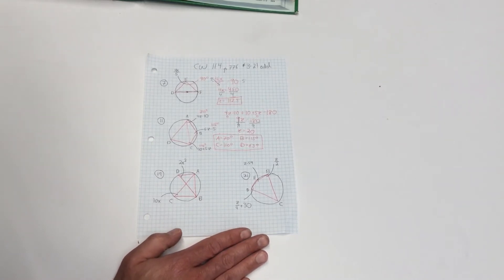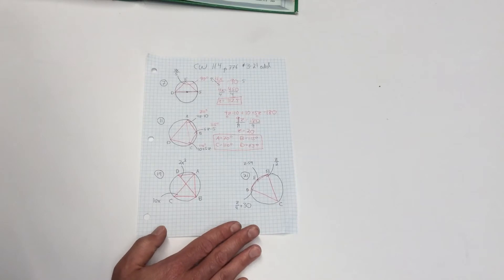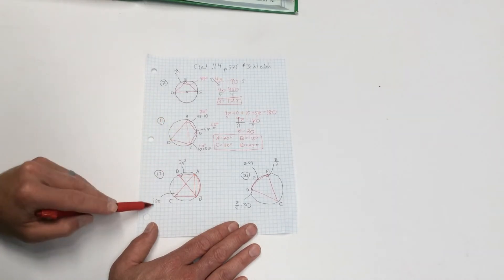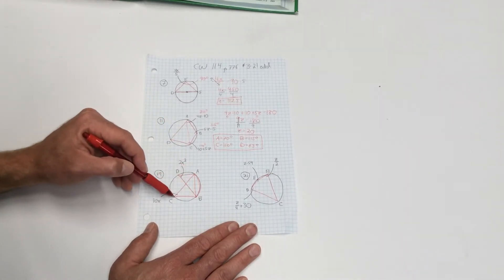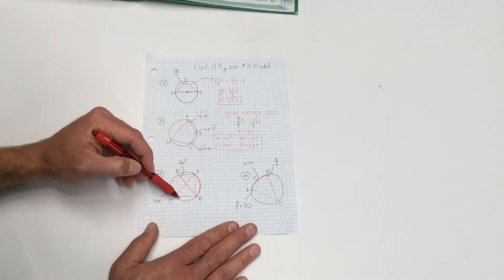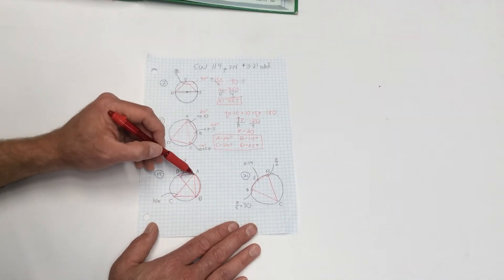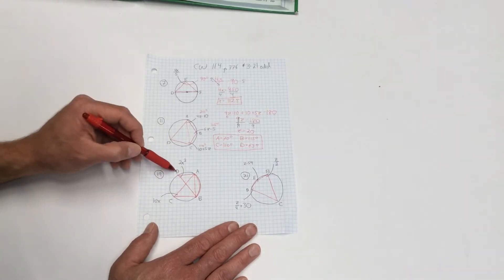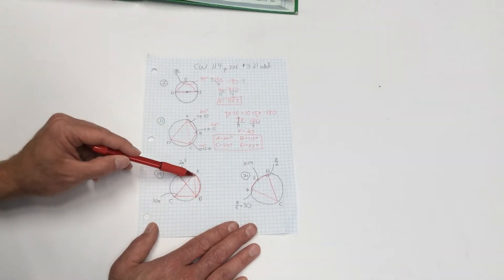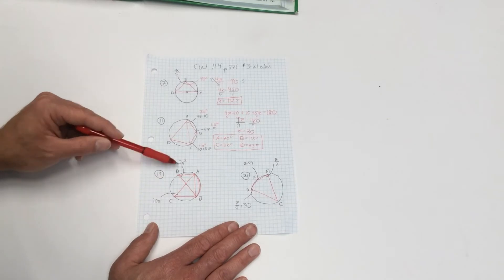Okay, number 19. We're finding arc AB. So I need to know arc AB. Well, I can see that arc AB is intercepted, or is being intercepted by angle C. So 10x is equal to AB. But I can also see that AB is also equal to angle D. Because these, D and C, are intercepting the same arc. And so that means, what do we know about D and C? They're intercepting the same arc. These must be the same.